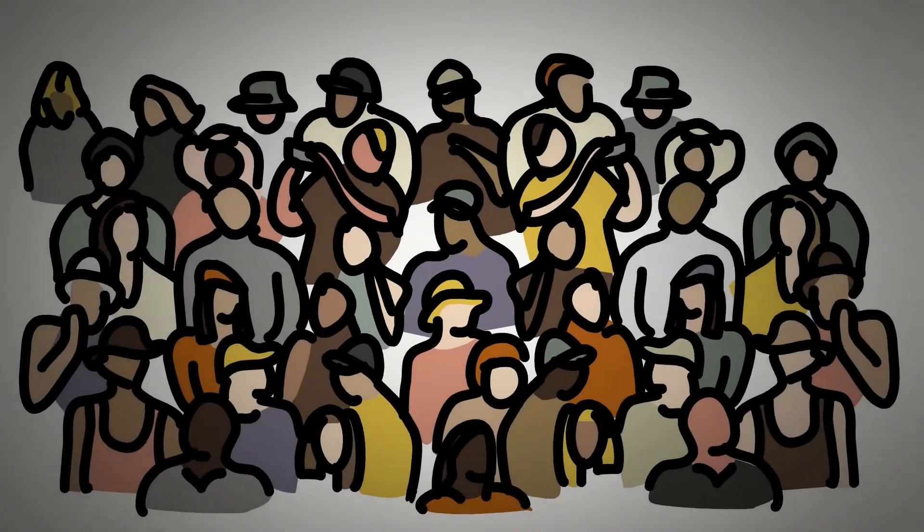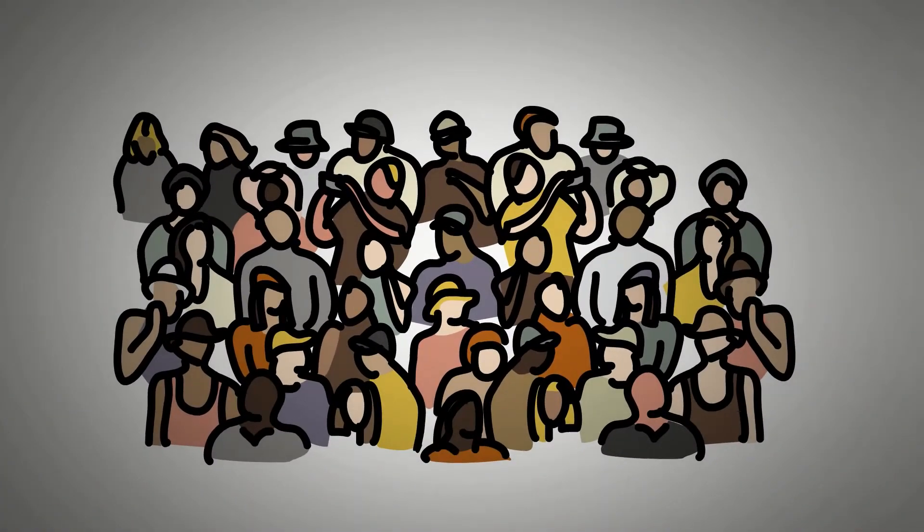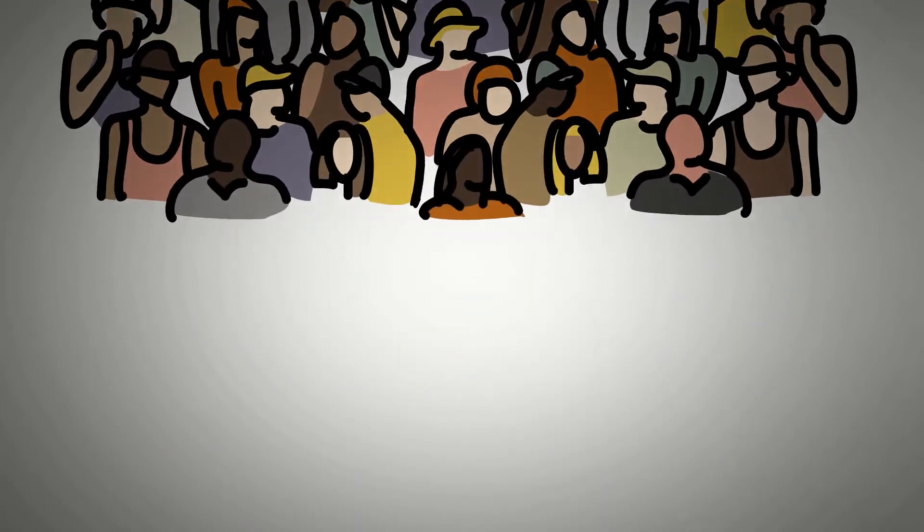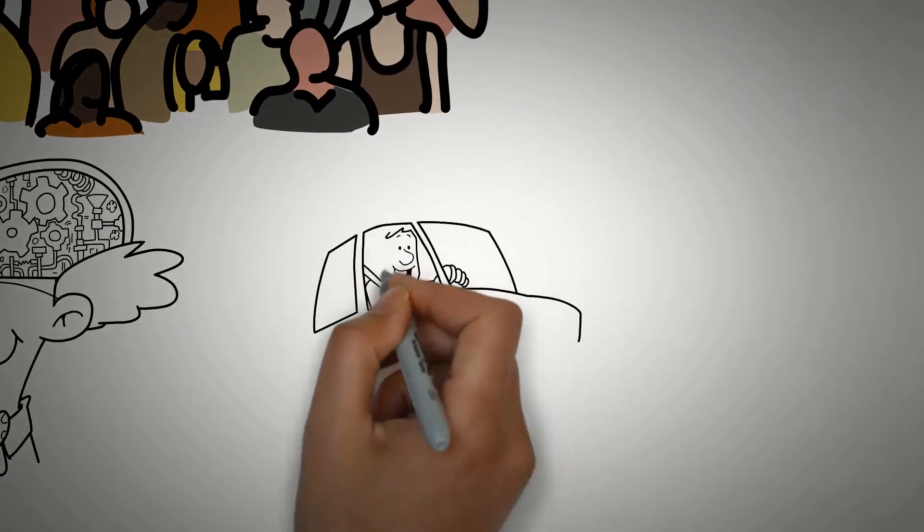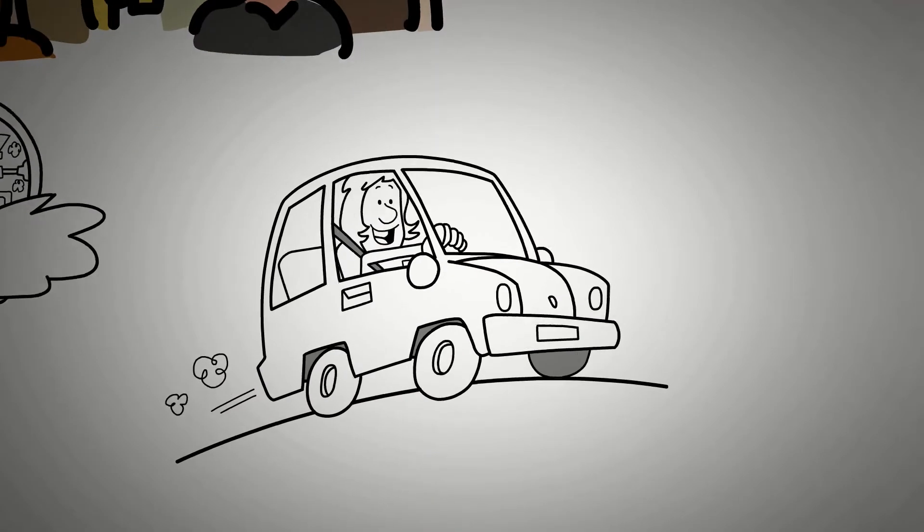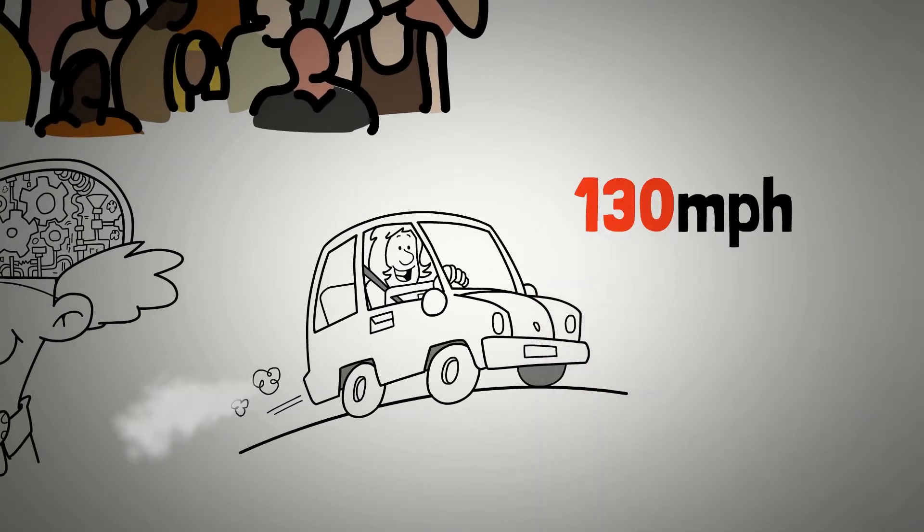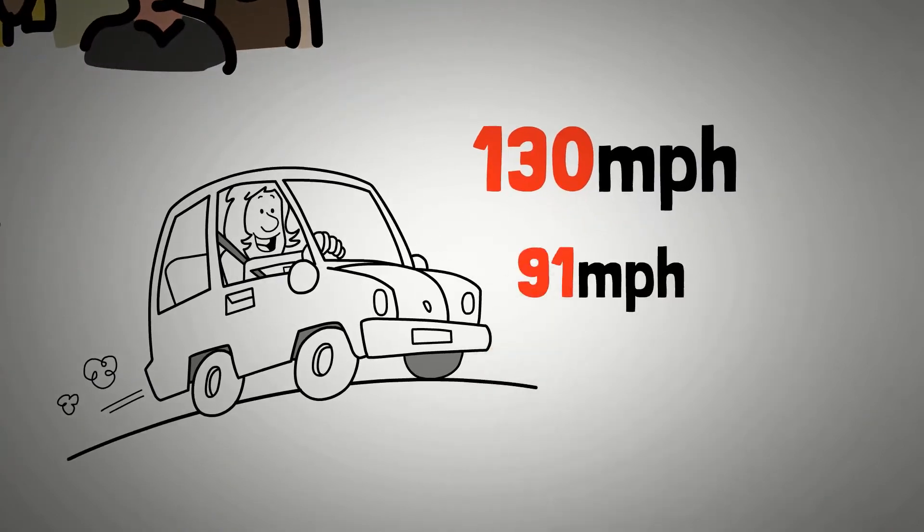I believe that most human beings are only living at about 40% of their capability. So the mind has a governor, like a car. If you're driving a car and the car has a governor on it, the car may say 130 miles an hour, but the governor is set for 91.